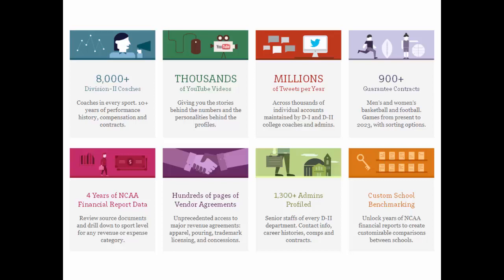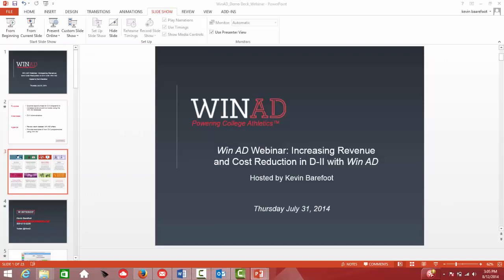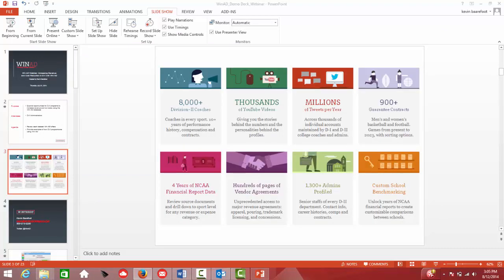The 30-second background: we launched the company in 2009 with a simple mission of giving ADs the best information to make the best decisions. We created a prototype based on AD feedback — we talked with Division 1 and Division 2 ADs and learned there weren't many great sources of information out there. We built a better mousetrap. We took the feedback of dozens of ADs, built a prototype, launched in 2009, and have been expanding and augmenting it ever since. Now it's a comprehensive set of information for daily operations, strategic planning, contract negotiation, and benchmarking.